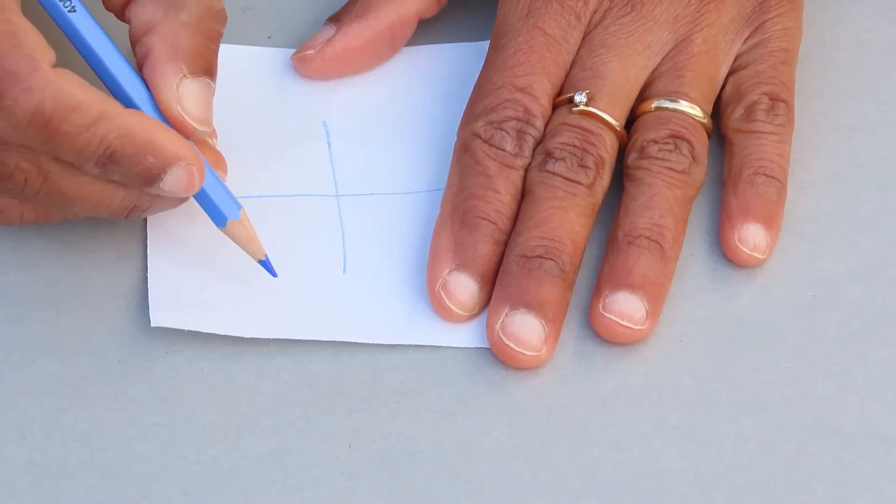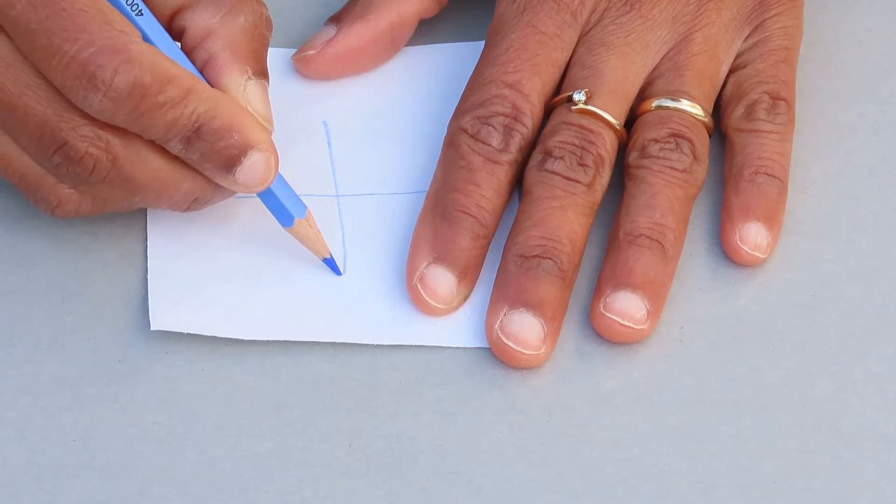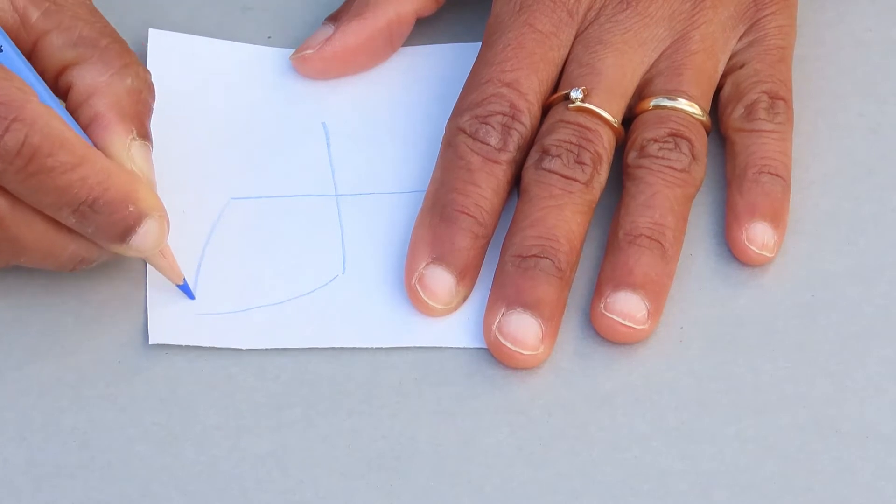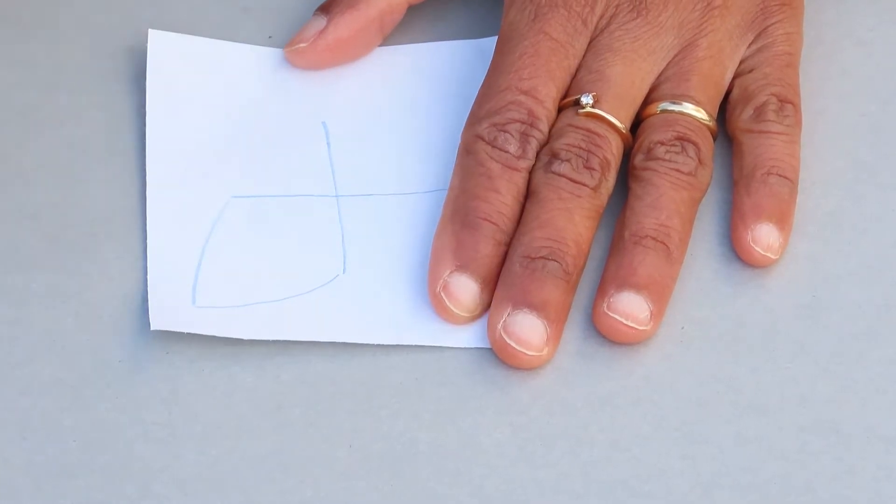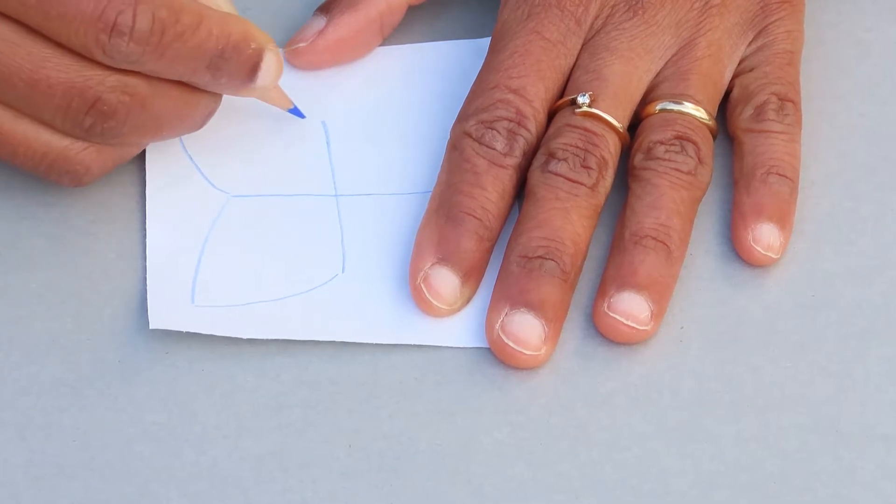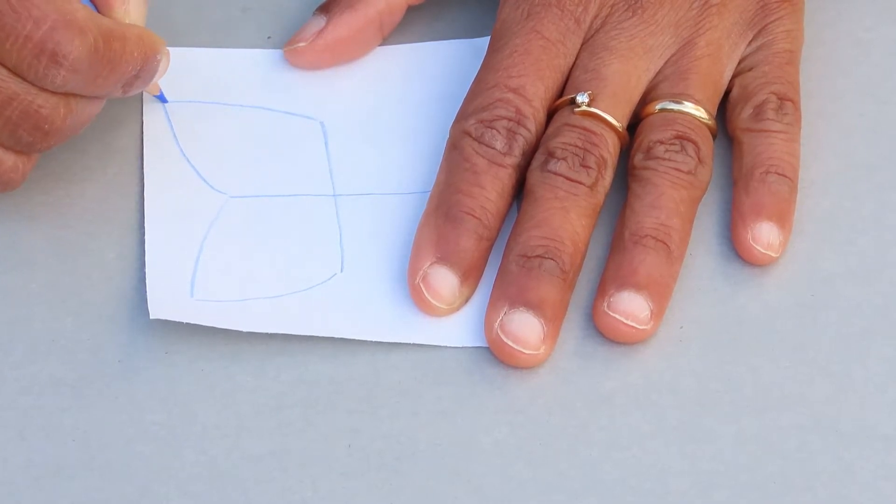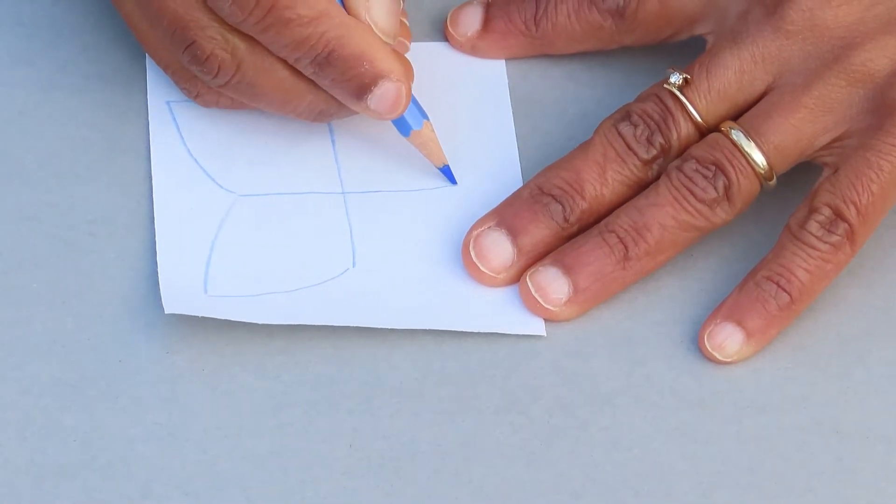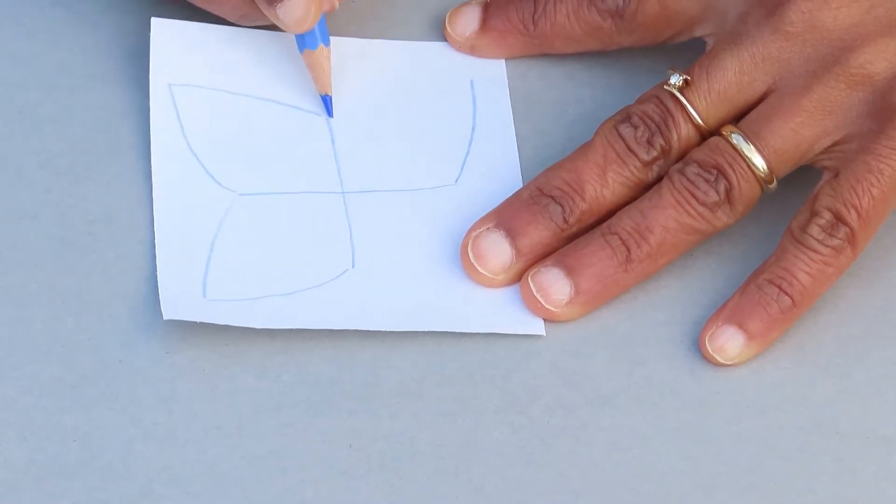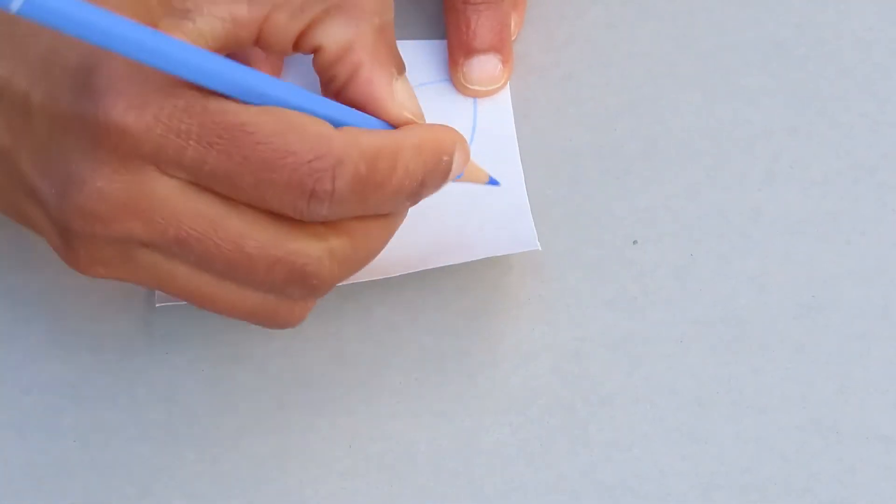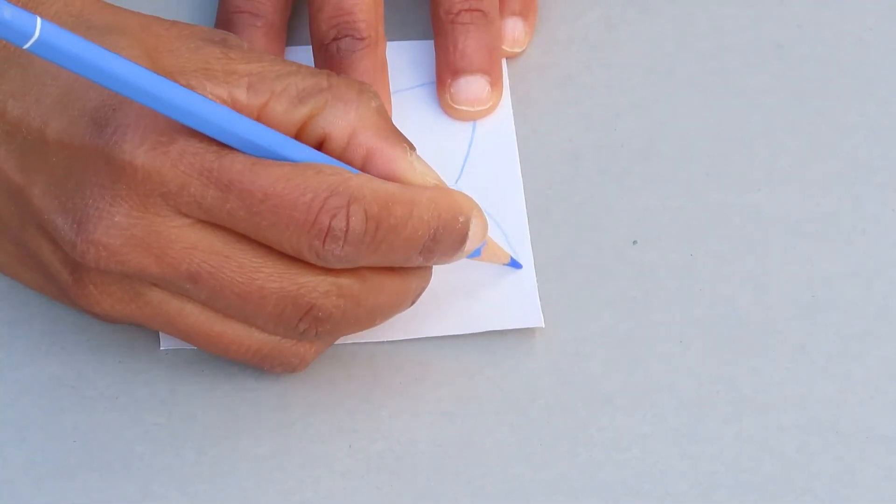And now draw two curved lines. One, two. Do the same thing here. One, two. And here, one, two, and one.